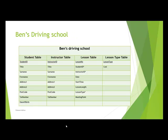The example we are going to look at is called Ben's Driving School. In this database we are going to have four different tables: a student table, an instructor table, a lesson table, and a lesson type table. Each table has its own primary key: student ID, instructor ID, lesson number, and lesson type respectively.